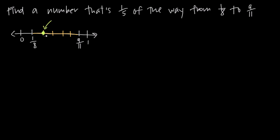This number is just 1 eighth plus 1 fifth of however long the distance is between 1 eighth and 9 elevenths. So the first thing we need to do is find out how long that section is — what's the distance between 1 eighth and 9 elevenths.